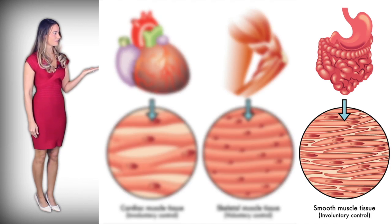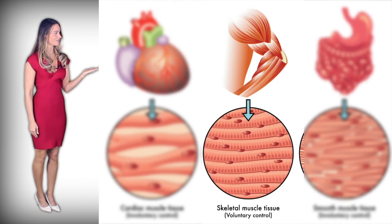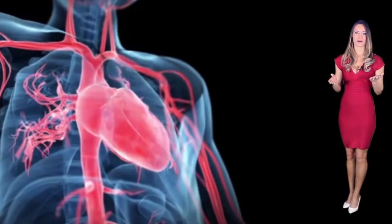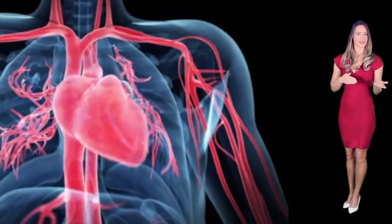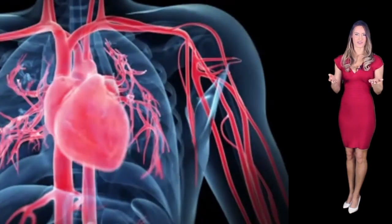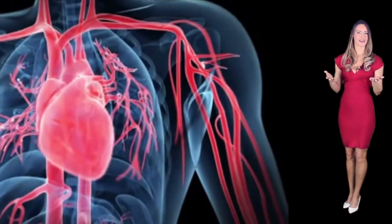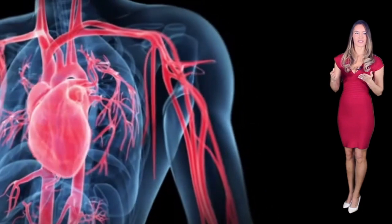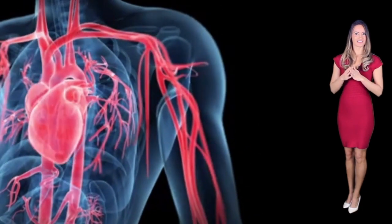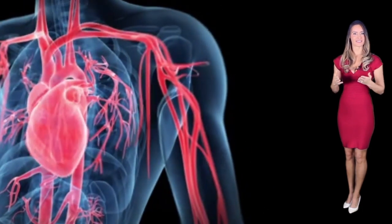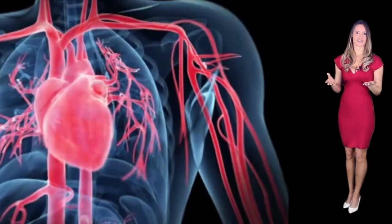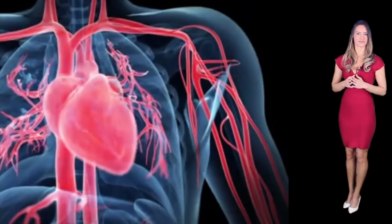The three types are cardiac, smooth, and skeletal. Cardiac muscle can be found in the myocardium — myo meaning muscle and cardiac meaning heart. Its job is to contract and relax depending on the signals sent by the cardiac conduction system.